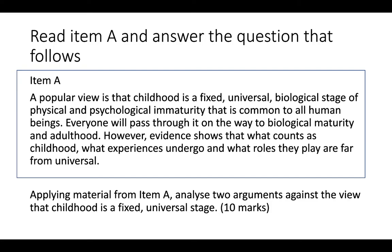If our question is to analyse two arguments against the view that childhood is a fixed universal stage, let's read through the item. 'A popular view is that childhood is a fixed universal biological stage of physical and psychological immaturity common to all human beings' — because we want arguments against that view, that sentence is not helpful. 'Everyone will pass through it on the way to biological maturity and adulthood' — that is supporting the statement, so again not useful. However, 'evidence shows that what counts as childhood, what experiences they undergo, and what roles they play are far from universal' — three hooks in one sentence.